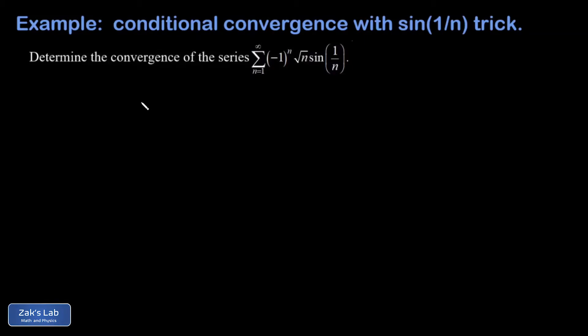In this video, we're investigating the convergence of the alternating series negative 1 to the n square root n sine 1 over n. We're going to start by looking for absolute convergence, testing for the convergence of the series of absolute values, which means we ignore the negative 1 to the n out in front. If we can show that this series converges, it automatically implies the alternating series converges, and that's why it's a wise place to start.